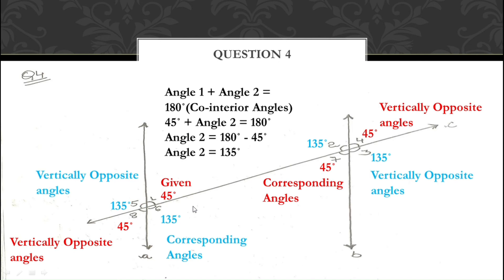So that is how you find the measurement of all missing angles. Only one angle measurement was given — 45° — and using it we found all the rest. To do this, you just need to know the properties of parallel lines. You could also use alternate interior angles to reach the same answers. If properties are clear, you can easily solve this question.